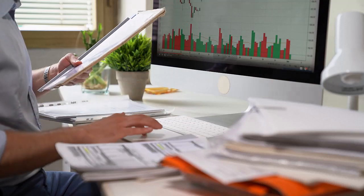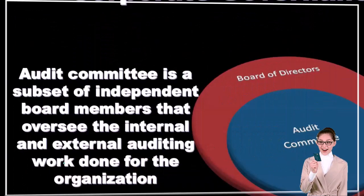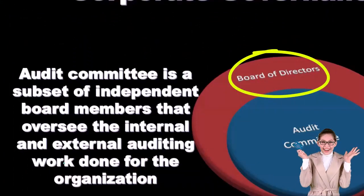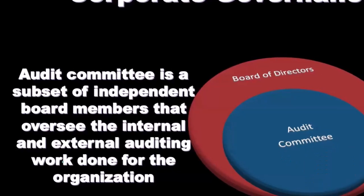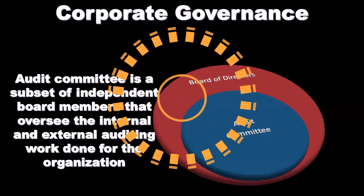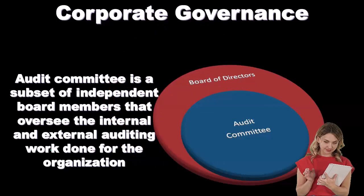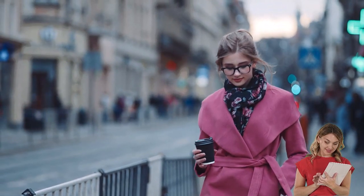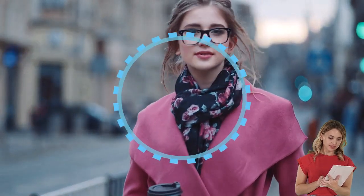The board of directors represents the shareholders, and the auditor makes a judgment on management to determine whether management is putting together the financial information in accordance with generally accepted accounting principles (GAAP). In this way, we have a check on management's reporting — from management to the board of directors. However, note that the independent auditor is in some sense hired by the company.